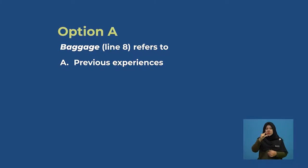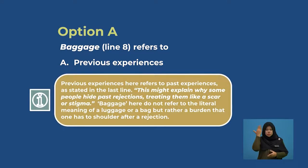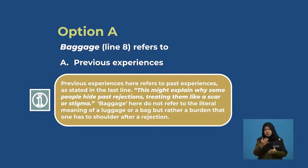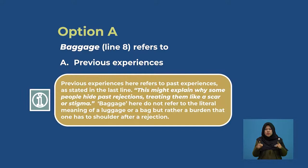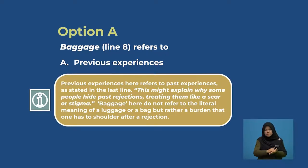Let's look at option A. 'Baggage' line eight refers to 'previous experiences.' Previous experiences here refers to past experiences, as stated in the last line: 'This might explain why some people hide past rejections, treating them like a scar or stigma.' Baggage here does not refer to the literal meaning of luggage or a bag, but rather a burden that one has to shoulder after a rejection. Therefore, this is the best answer.